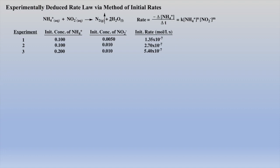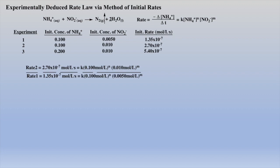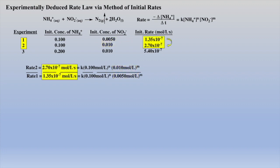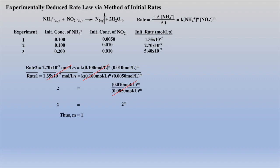If we examine the data from experiment two and experiment one, we see that the concentration of ammonium was kept constant and the concentration of nitrite was doubled, which did have an effect on the initial rate. Mathematically, we can examine the ratio of these two experiments to determine what effect doubling the concentration of nitrite had on the rate of reaction. After a few simplifications, we see that M is equal to one, which is to say nitrite is first order within this reaction.